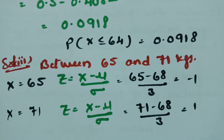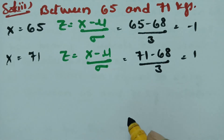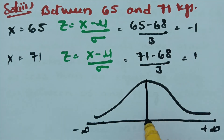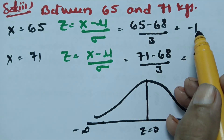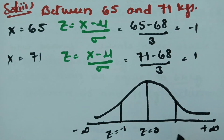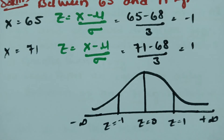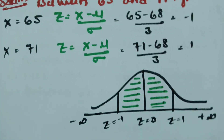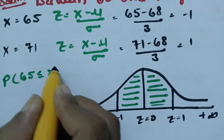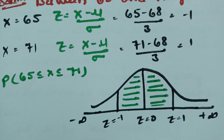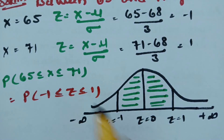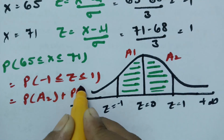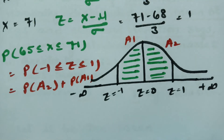So we need to calculate the area between 65 and 71, which corresponds to z equals minus 1 and z equals plus 1 on the normal curve. This is the required region. The probability of 65 less than or equal to x less than or equal to 71 equals the probability of minus 1 less than or equal to z less than or equal to plus 1, which is area A2 plus area A1.